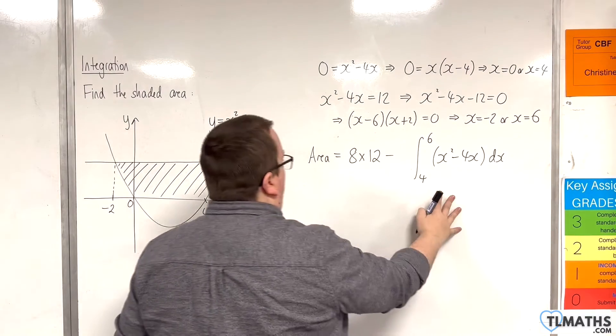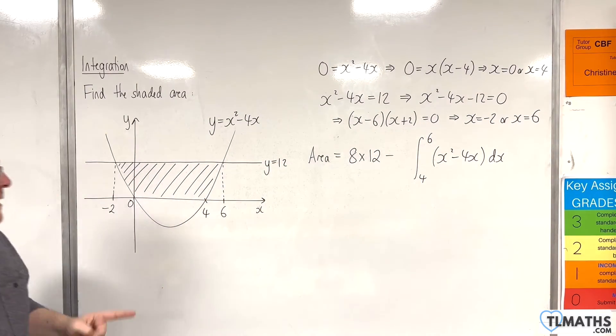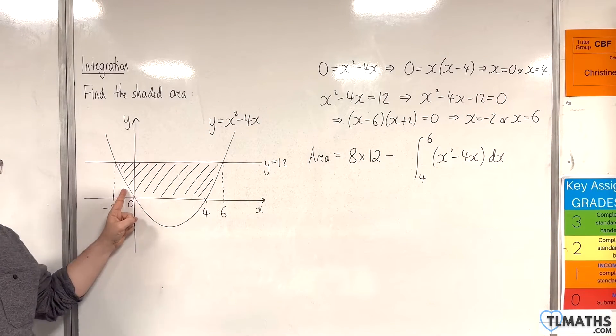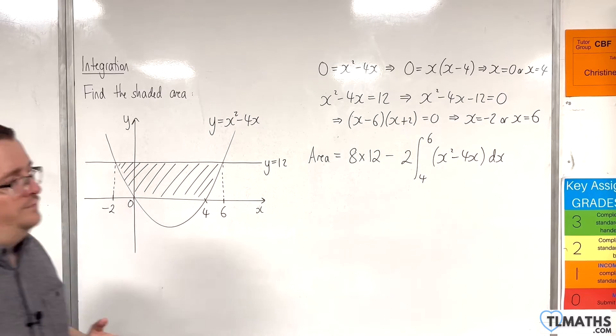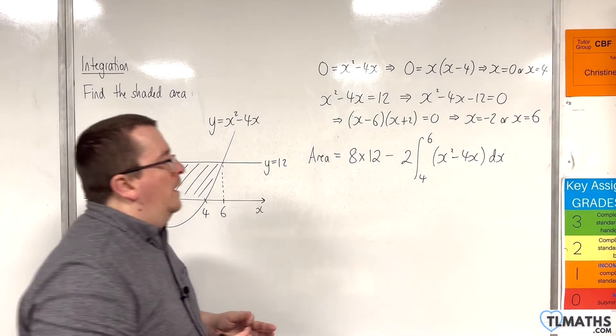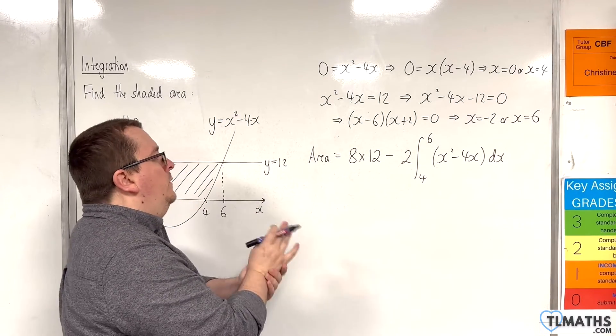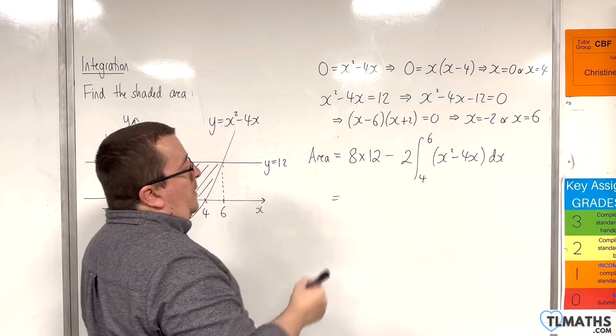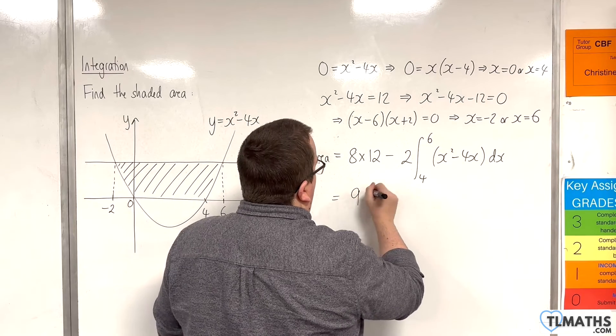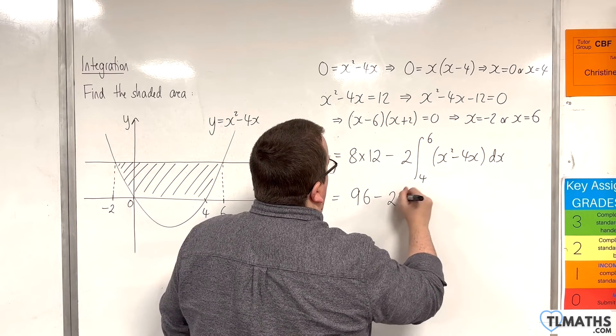Now, if I just take away one of them, that would just be that piece. But as I just said, that piece is the same size. So I could just take away two lots of that integral. So we have 8 lots of 12, so 12 eighths of 96.